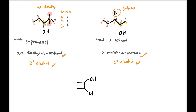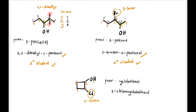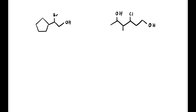For a cyclic structure where OH is directly attached to cyclobutane, the parent is cyclobutanol. OH is at carbon 1, and the chloro substituent is at carbon 2, giving the full name 2-chlorocyclobutanol. In terms of class, it is a secondary alcohol.